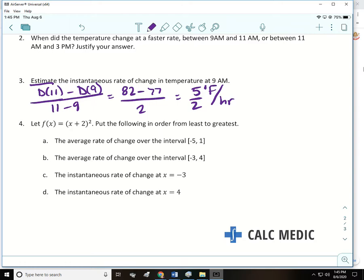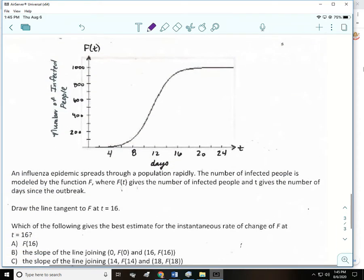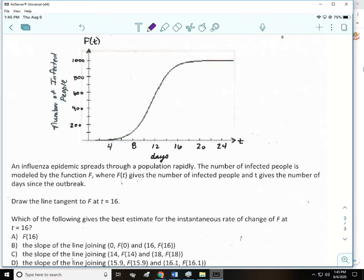I'm going to just talk about number 4 tomorrow. We're going to go on to the graphs. So this is a problem I made up last year about a virus. An influenza epidemic spreads through a population rapidly. The number of infected people is modeled by the function F, where F of T gives the number of people infected, and T gives the number of days since the outbreak. I want you to draw the line tangent to F at 16. So 16 days, I'm going to go up to the graph, I'll say that's about right here. When you draw a little tangent line, just draw it so it just scrapes the surface.